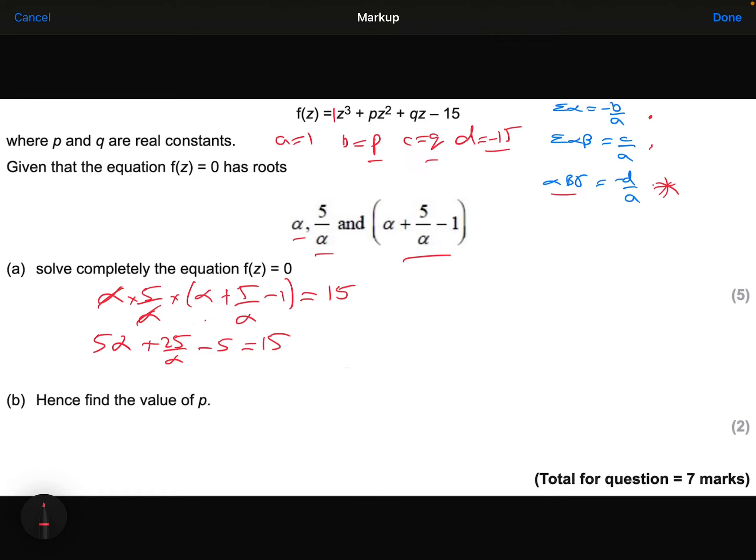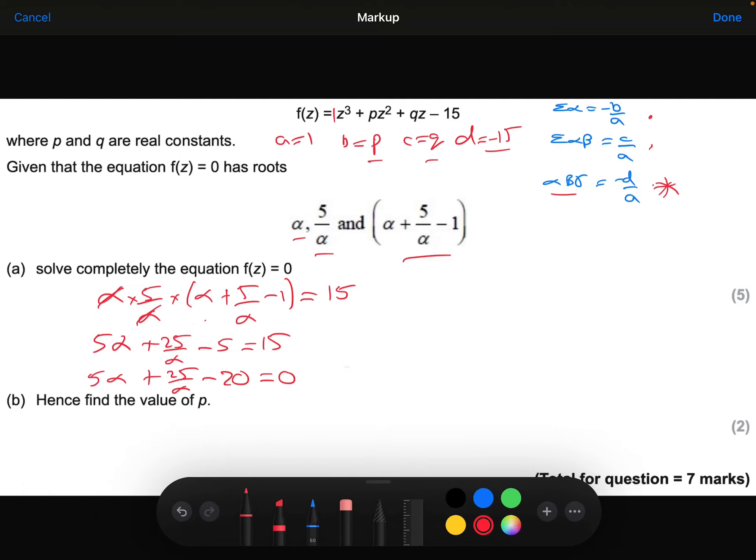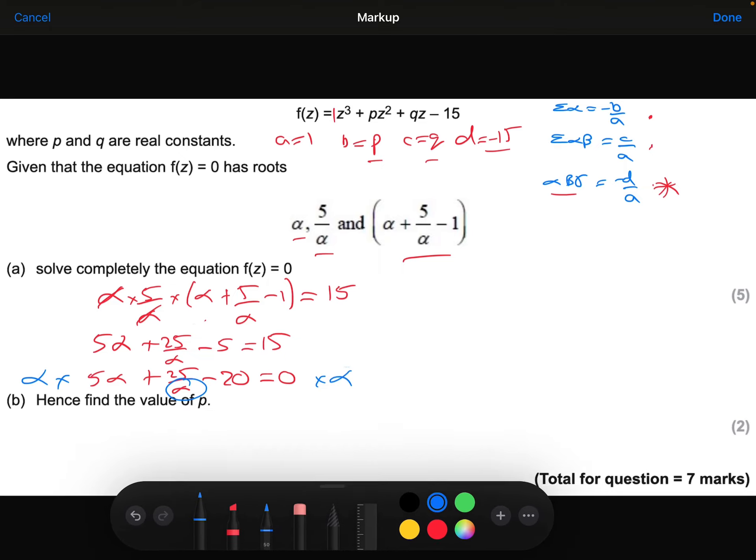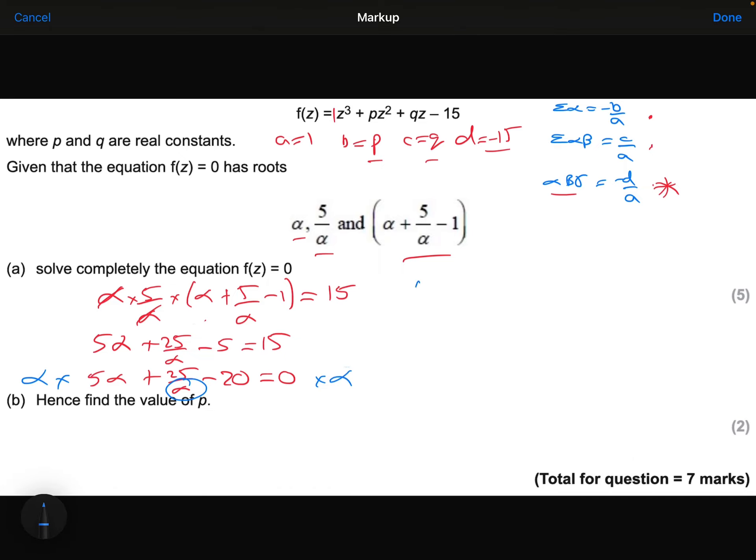Let me take 15 away from both sides, so I'll get 5 alpha plus 25 over alpha minus 20 equals 0. I don't particularly like this awkward alpha down there on the denominator, so let me multiply through both sides of this equation by alpha. That's going to give me 5 alpha squared plus 25 minus 20 alpha equals 0.